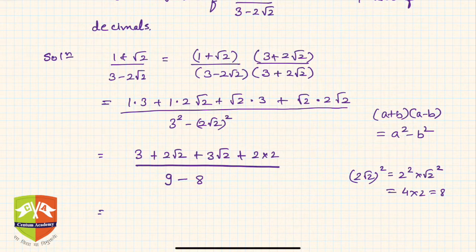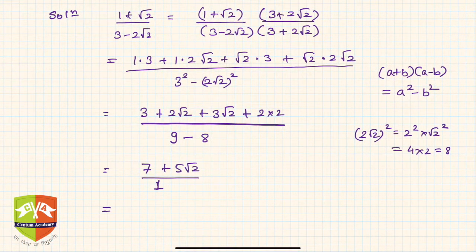In the numerator what do we obtain? We obtain 3 plus 4, that is 7, plus 5 root 2 divided by 1. So hence now it is 7 plus 5 root 2 divided by 1.